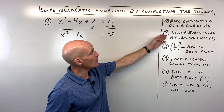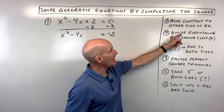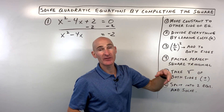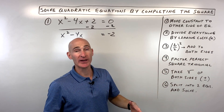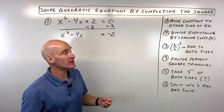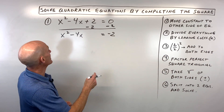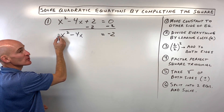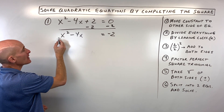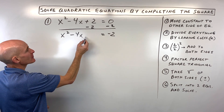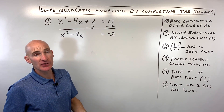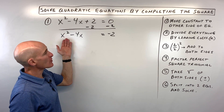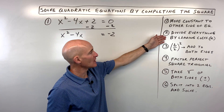Step number 2: divide everything by the leading coefficient, or the 'a' value — the number that comes in front of the x squared term. In this case, it's understood to be 1, so dividing everything by 1 gives itself. We don't really need to do that in this particular problem, but we'll do it in the next one.